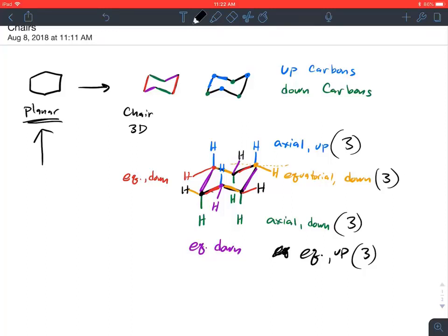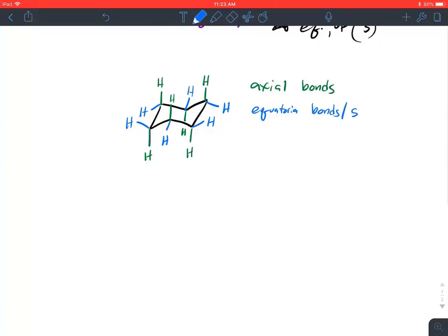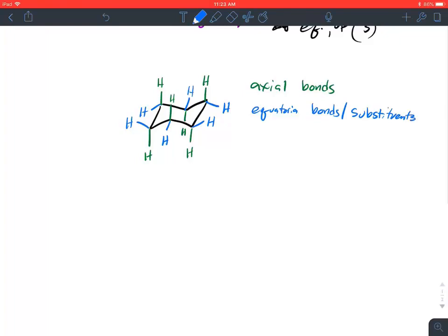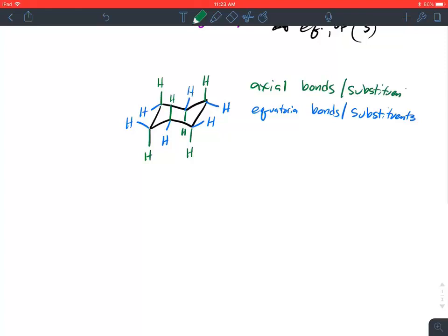I'm going to redraw the cyclohexane and explain these in a slightly different manner. I'm going to draw all of the axial bonds in green, whether they're up or down, and I'm going to put hydrogens on these. And I'm going to use blue to show the equatorial bonds, whether they're up or down. These could be bonds or substituents.